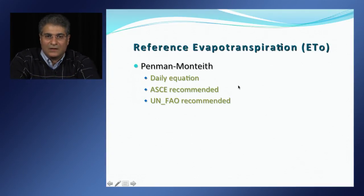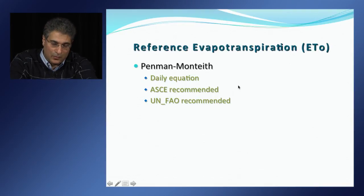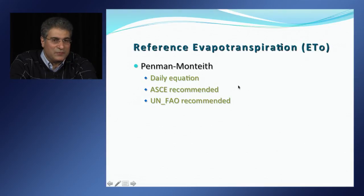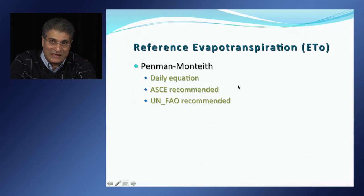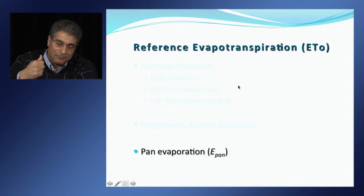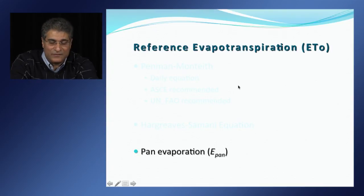COPPLUS is designed to compute daily reference evapotranspiration using the daily Penman-Monteith equation, recommended by both ASCE and UN FAO. If daily solar radiation, maximum and minimum air temperature, wind speed, and dew point temperature are input, the program automatically estimates daily reference ETo using the Penman-Monteith equation. If only maximum and minimum air temperature are input, the program uses the Hargreaves-Samani equation to calculate ETo. If PAN evaporation data are input, the program uses a new methodology to estimate reference evapotranspiration as a function of fetch value, without the need for wind speed and relative humidity data.